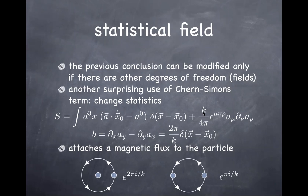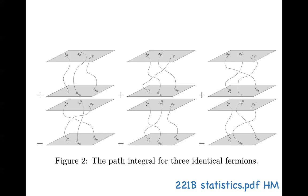You can even consider k to be 2, 3, and so on — giving a fractional phase when interchanging particles. This phase can in principle be any phase. Such a particle is called an anyon, and that's possible only in 2+1 dimensions. I took these pictures from lectures I wrote for 221B when I introduced the idea of quantum statistics. In the path integral of identical particles, you not only sum over all possible paths in the periodic time direction — you also add paths where particles are interchanged between the initial and final time slices.